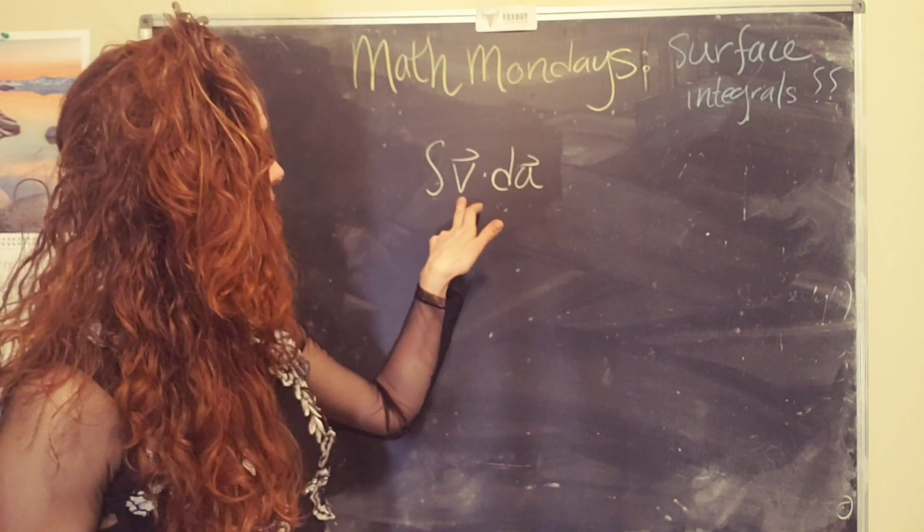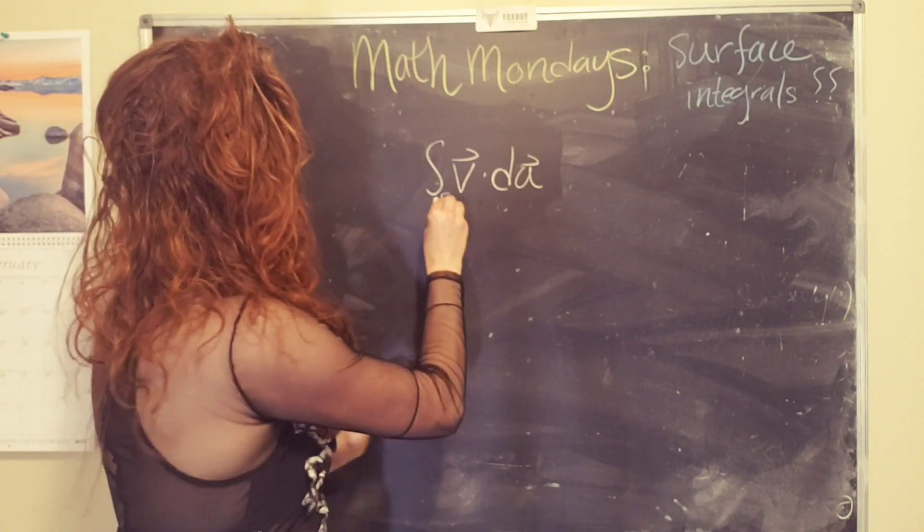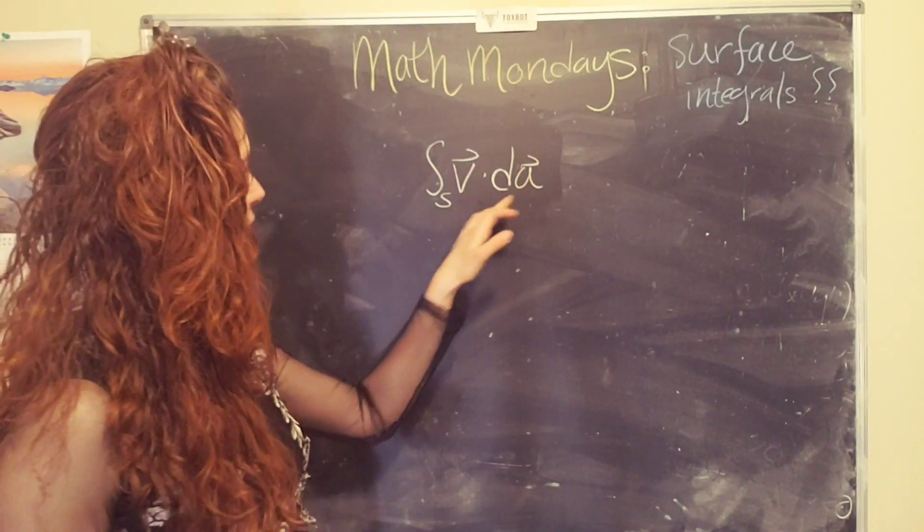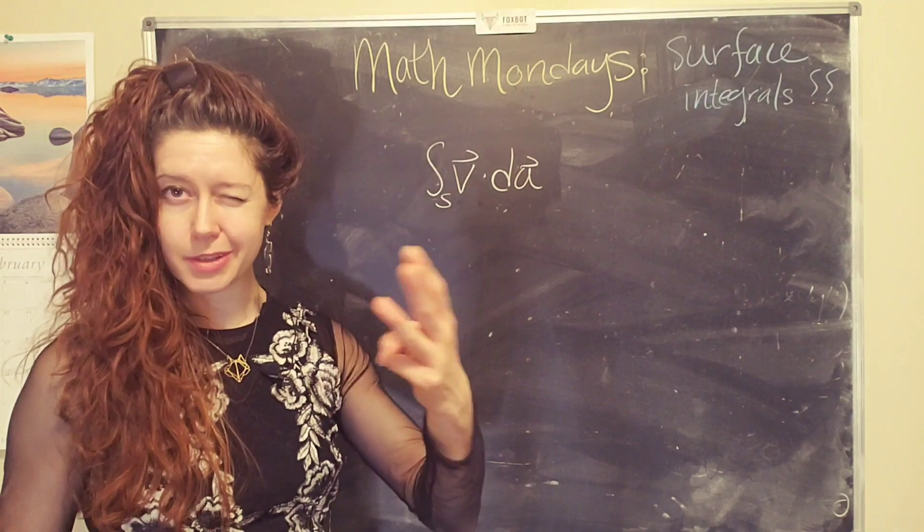So in this case we have v which is a vector. Oops, usually there's a little s here for surface. Yay! To let you know that this is a three-dimensional integral.